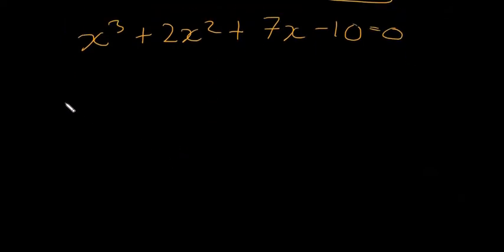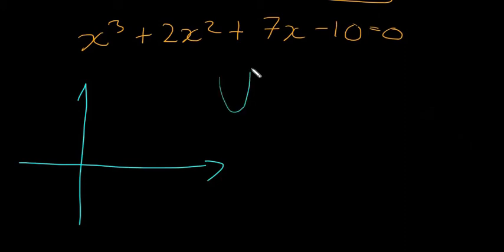When we're talking about cubic equations, there are three different types of cubic graphs we can get. We know that a quadratic graph is going to be a U shape, but a cubic graph is going to look like this. So if you graph all the points on this, it's going to look something like this.